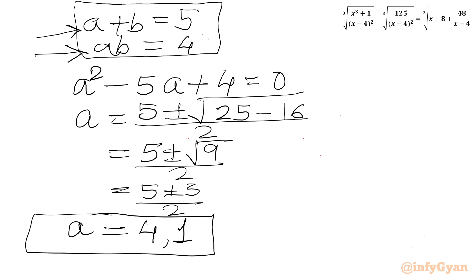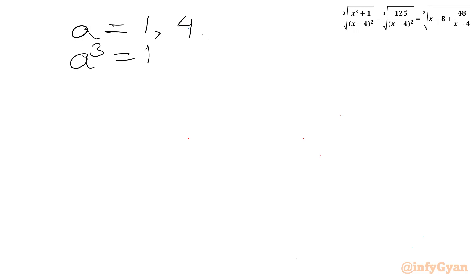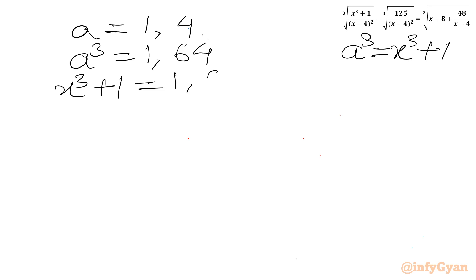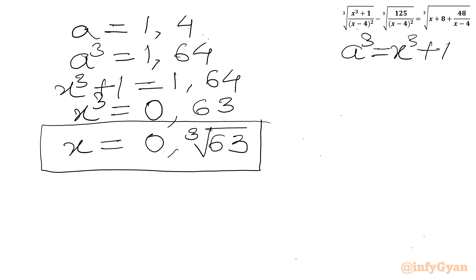Now a was our substitution where x³ + 1 equals a³. With a equal to 1 and 4, a³ equals 1 and 64 respectively. So x³ + 1 equals 1 gives x³ equals 0, and x³ + 1 equals 64 gives x³ equals 63. Taking cube roots of both sides, we get x equals 0 and x equals cube root of 63 as the real solutions. So this will be our final answer.